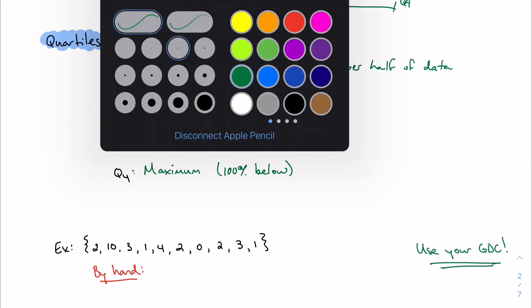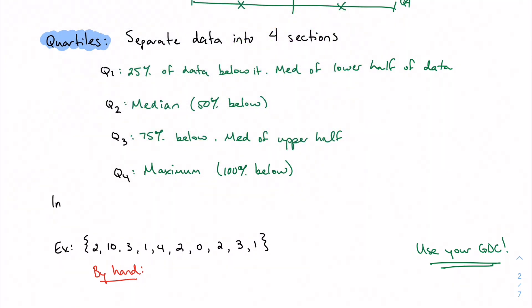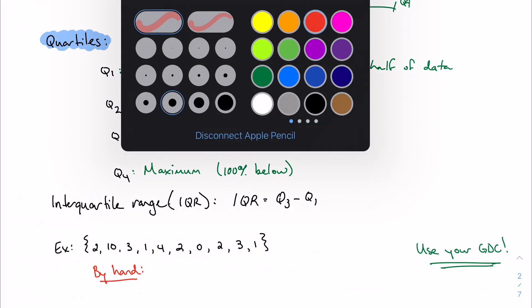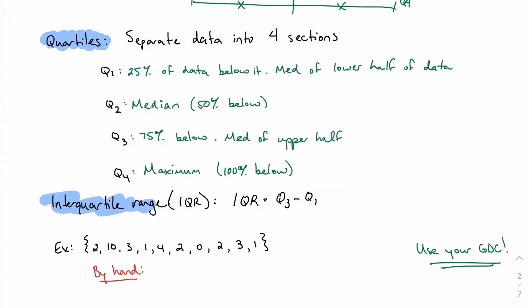So those are my four quartiles. And what that does is it gives me a better sense of how exactly the data is spread out. Not just that it is spread out, but how specifically it is spread out. And there's something that we can do further with this. And that's to find what we call the interquartile range, or IQR.